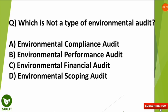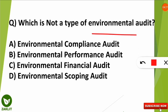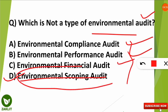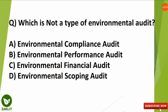The next question is: which is NOT a type of environmental audit? The correct answer is option D. The valid types of environmental audit are: environmental compliance audit, environmental performance audit, and environmental financial audit. The option 'environmental scoping audit' is not a valid type and is therefore the incorrect one.